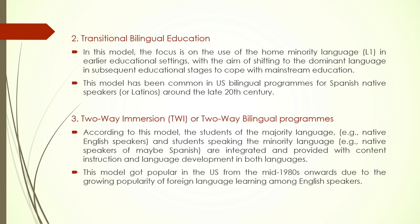Then there is Transitional Bilingual Education, where the focus is on use of the home minority language in earlier education settings with the aim of shifting to the dominant language gradually — you start with Spanish and gradually move to entirely English-dominated language. Then Two-Way Immersion is also another model — according to this, students of the majority language, native English speakers, and students speaking the minority language such as Spanish are integrated and provided with content instruction and language development in both languages. This comparatively newer development emerged mid-80s due to the growing popularity of foreign language learning among English speakers.